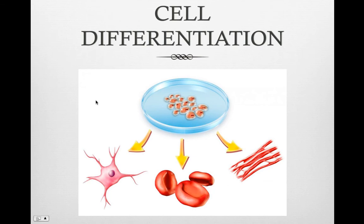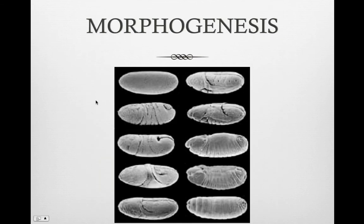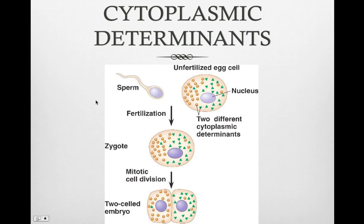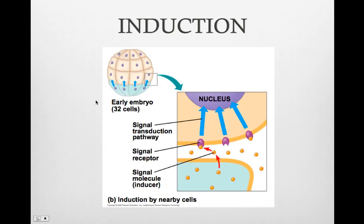Cell differentiation is when the cells of an embryo become specialized. As the embryo grows, specialized cells are arranged to give the organism its shape — this is called morphogenesis. There are materials in the original unfertilized egg that program gene expression as the cell divides and differentiates. The cytoplasm of the unfertilized egg contains RNA and proteins that are not distributed evenly; these are called cytoplasmic determinants. As mitosis divides the fertilized egg, these determinants are unevenly distributed in the new cells, affecting gene expression differently in each cell. The cells then begin to receive signals from surrounding cells, and cell surface molecules and growth factors secreted by neighboring cells cause induction, signaling the cell to begin to differentiate.